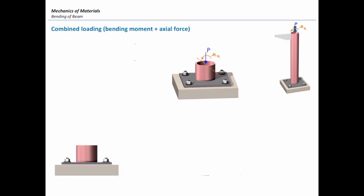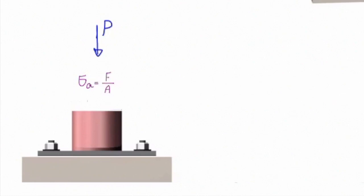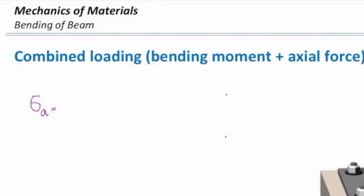First, how much is the stress caused by the axial force? Stress caused by the axial force is simply P over area. I will use σ_A to show that this is the stress caused by the axial force, and that would be a normal stress. This is what we learned in chapter 3 on axially loaded elements — force over area. The distribution of this stress is uniform across the section, so every point in that section gets the same stress. σ_A = F/A, and that is the normal stress caused by the axial force.